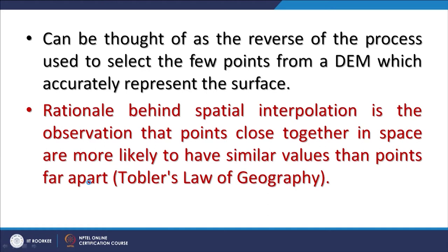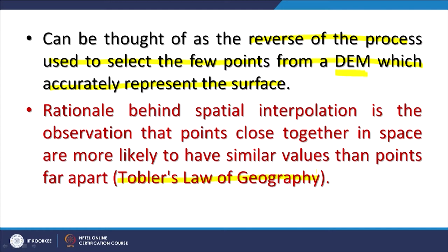This interpolation can be thought of as a reverse process used to select few points from a DEM which accurately represent the surface. The rationale behind interpolation is the observation that points close together in space are more likely to have similar values. This is Tobler's law of geography, which considers that whichever is the closest will have the maximum influence in the prediction values — points close together in space are more likely to have similar values than points far apart.